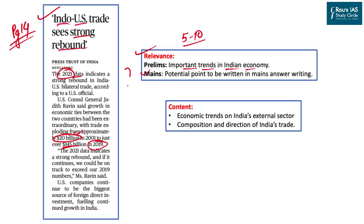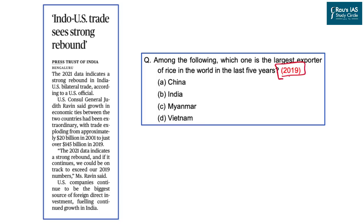In the Mains examination, this information could be used as a potential point in your answer. The best method to prepare for UPSC is to capture important information from various backgrounds. For instance, in 2019, UPSC asked in the preliminary examination about which country was the largest exporter of rice in the world in the last 5 years — they asked about the trend, not specific data. The answer was India. So keeping this in mind, we will look into important economic trends in India's external sector and the composition and direction of India's trade, both taken from this year's Economic Survey.